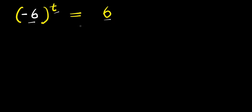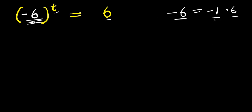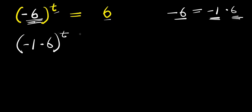Now let's consider this false method. We have negative 6, and we can express this as a product of negative 1 and 6. So we are going to replace this negative 6 with negative 1 times 6, raised to the power of t, and this equals 6.